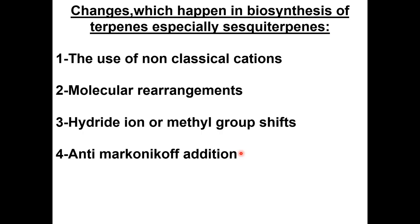Some changes that happen in the biosynthesis of terpenoids generally, and sesquiterpenes particularly, include the use of non-classical cations, molecular rearrangement (so-called Wagner-Meerwein rearrangement), methyl and hydride group shifts, as well as anti-Markovnikov addition. We will pinpoint the involvement of these steps in the biosynthesis of terpenes in the following examples.